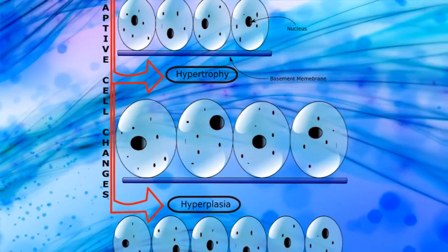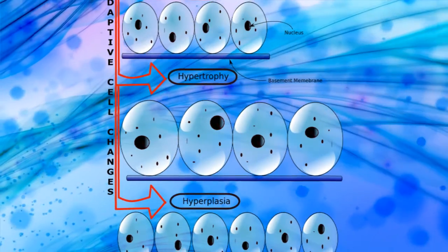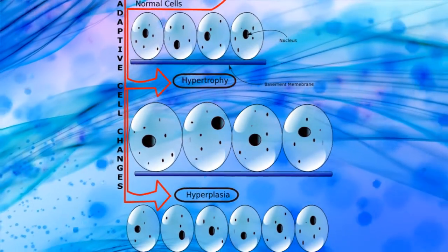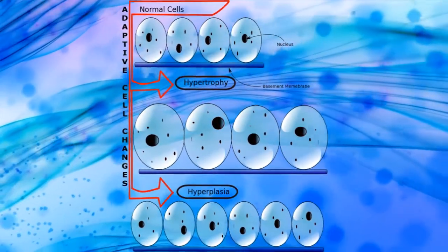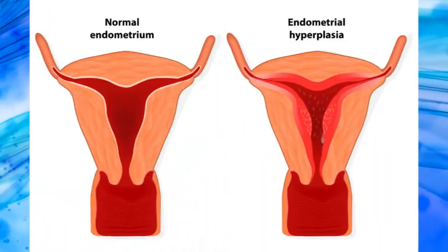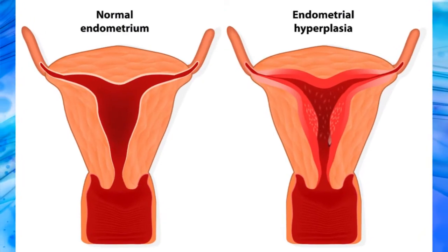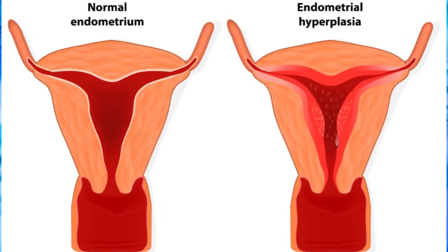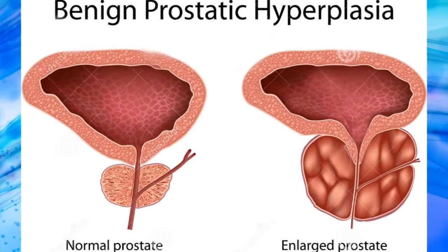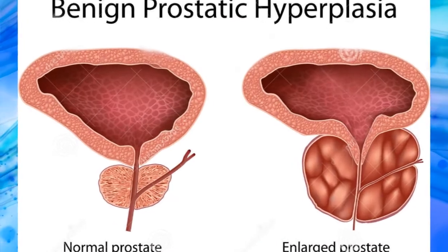Hyperplasia is an adaptive cell change, involving an increase in the number of cells of a tissue. It can also be physiological or pathological, like benign prostatic hyperplasia.